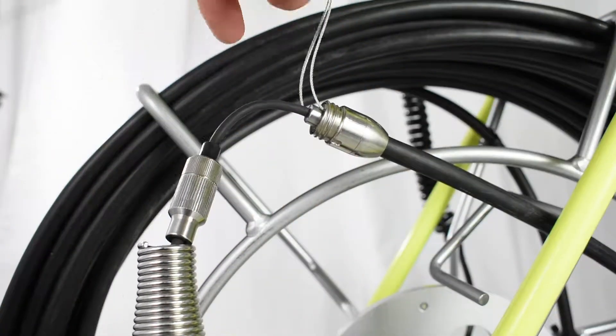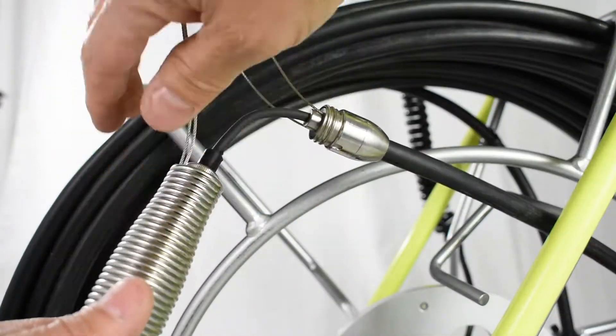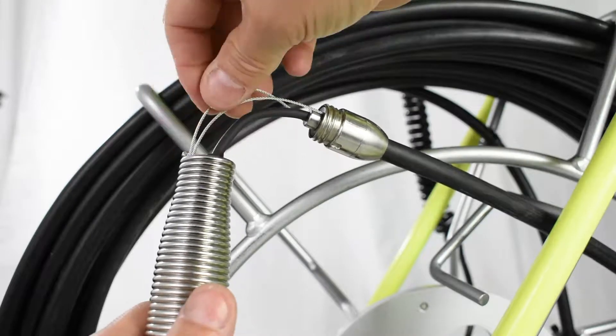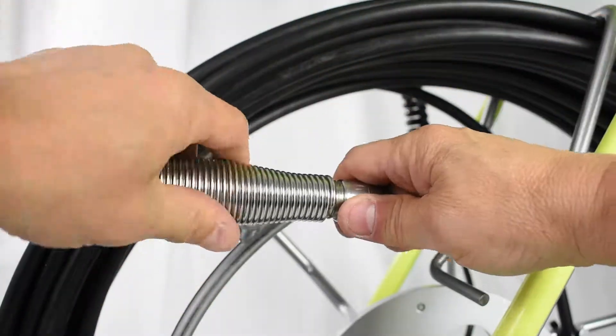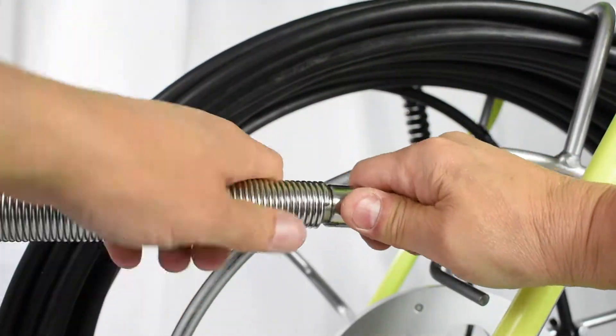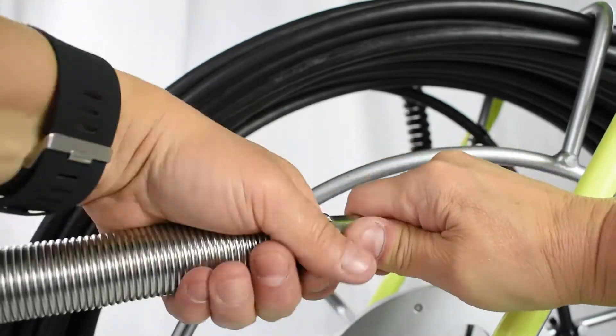Push sonde further into the spring, making it easier to insert the strain reliefs. Hand tighten the spring onto the small end. Be sure not to over tighten the spring on the termination.